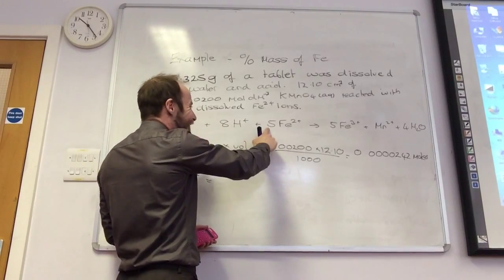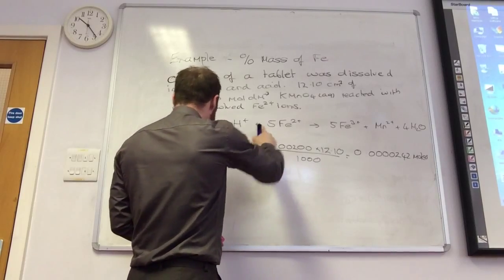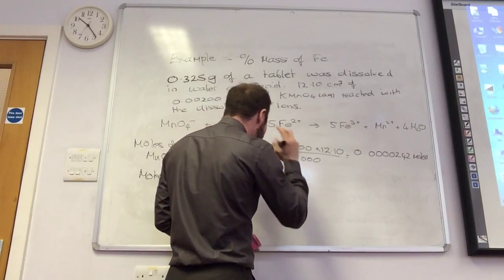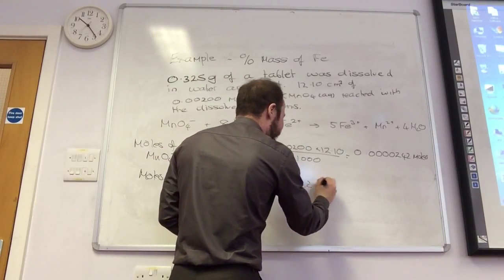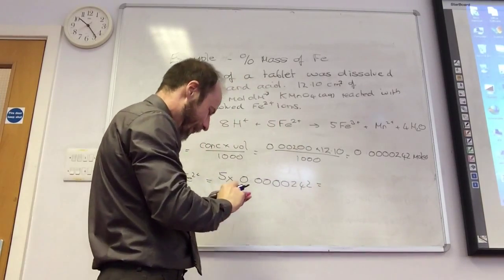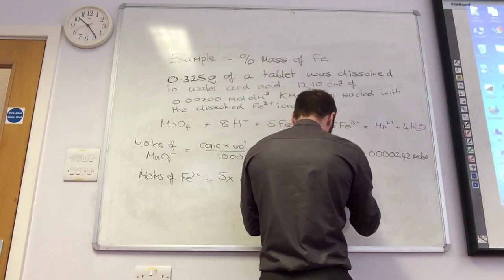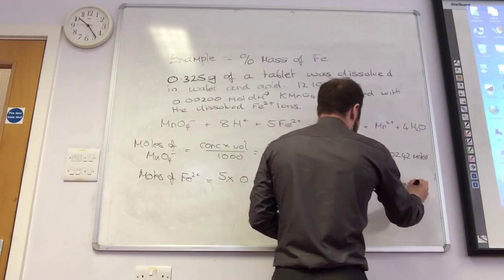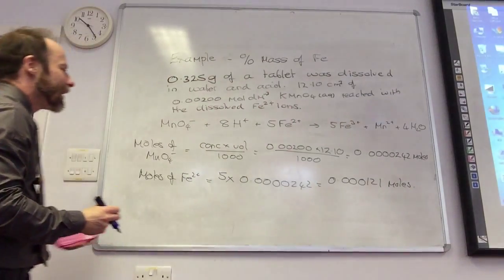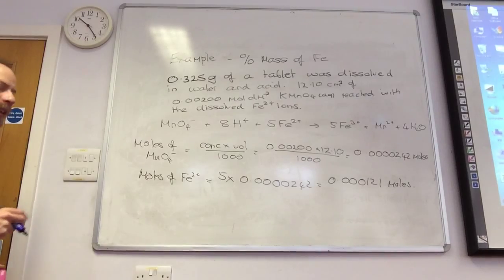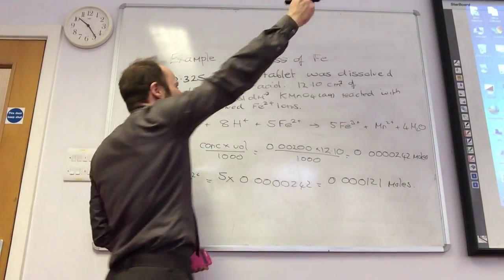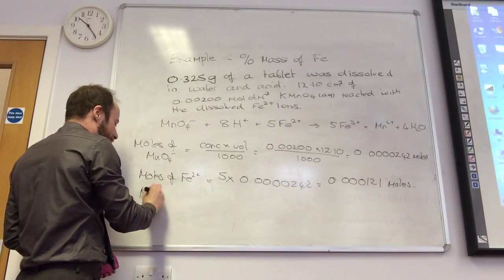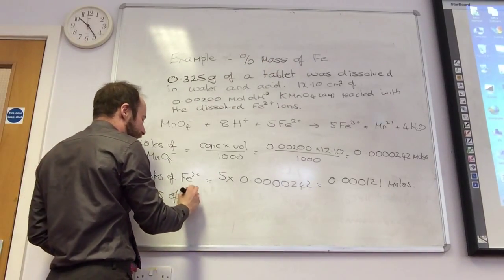Times by 5. Equals 0.0001211. Cool. So I now know how many moles of iron I had. What do I want? I need to find the percentage mass. So what do I need to times that by? I need to work out my mass of Fe2+.